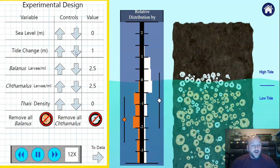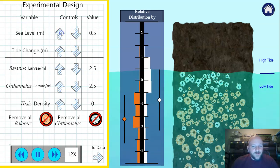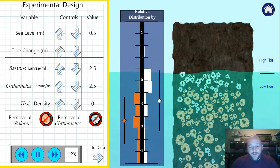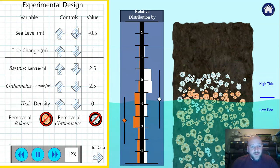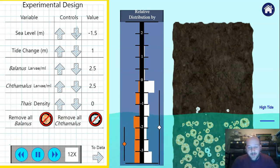We could limit the amount that the tide actually changes and see how that affects things. We could also change the sea level if we want to, so we can make the sea level go higher and see if they colonize higher. We can bring the sea level down and see what happens to the population as they move down.